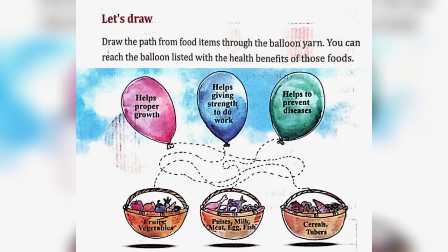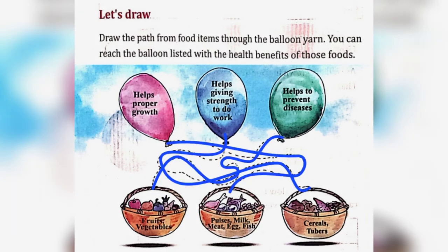Let's draw. Draw the path from food items through the balloon yarn. You can reach the balloon listed with the health benefits of those foods. Let's match these balloons to the baskets. Fruits and vegetables help to prevent diseases. Pulses, milk, meat, egg, and fish help proper growth. Cereals and tubers help give strength to do work.